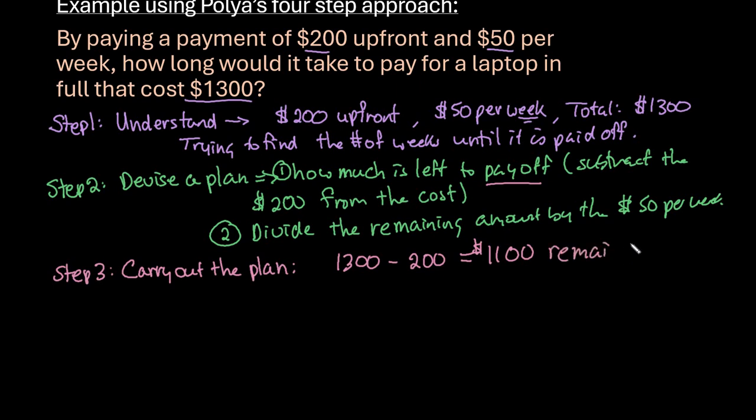It is important to keep in mind what your units you're working with, so that you end up with the correct units. We should end up with weeks as our correct units. We're figuring out the $1,100, that's going to cancel out the dollars with the $50 per week when we divide.